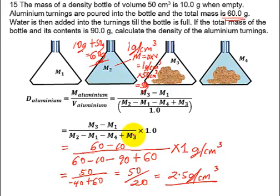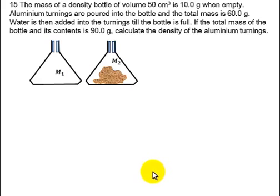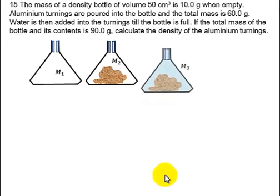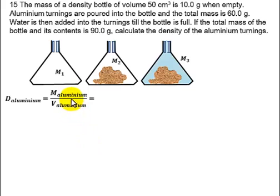Now let's look at a different method, which is closely related to this one. In this question we are just given three steps. M1: mass of the empty density bottle. M2: mass of aluminium turnings and the density bottle — note this M2 is not the same as M2 in the previous method. And finally M3: the total mass of the density bottle, aluminium turnings, and water. M1 is 10 grams, M2 is 60 grams, and M3 is 90 grams.